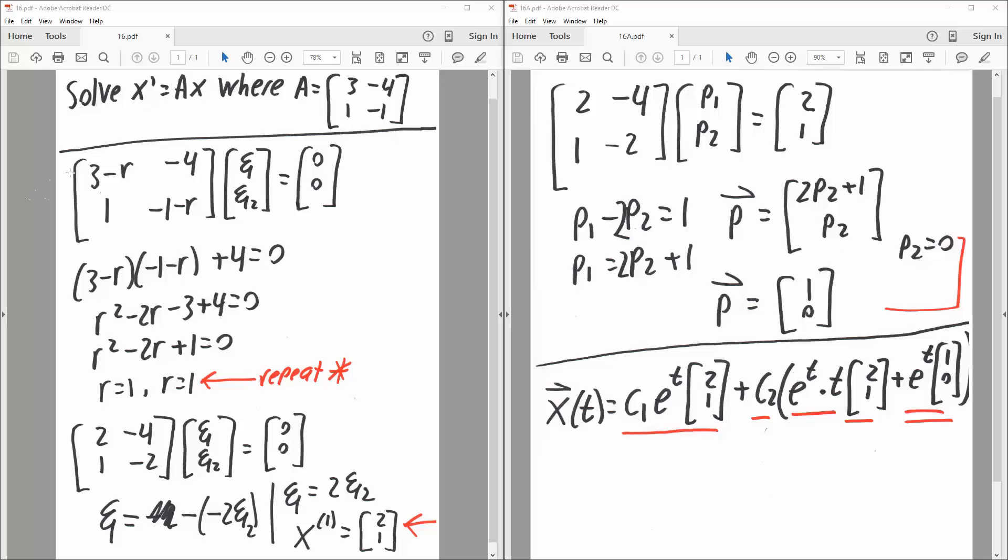And the first thing we're going to do is get our eigenvalues. So we say 3 minus r, and then negative 1 minus r. This diagonal here, we say minus r, minus r. This diagonal here, 1 and negative 4, remains the same.